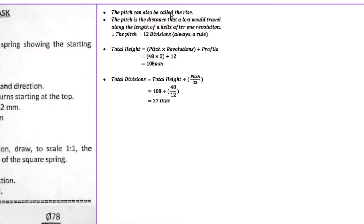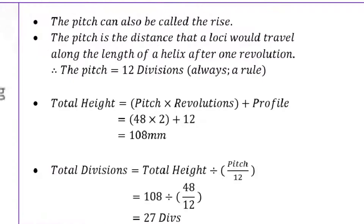From the formulas: the pitch is the distance that the locus would travel along the length of the helix after one revolution. So if it starts on the right side at the bottom and rotates once, it will end up on a higher level after turning once around the shaft or axis. The pitch always equals 12 divisions — that's a rule set in stone.